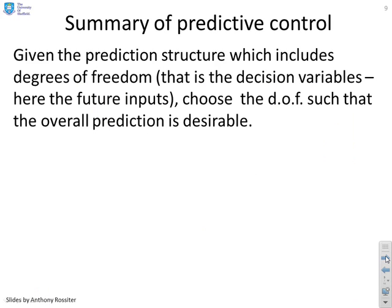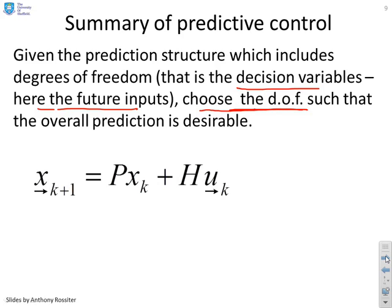So in summary, we've given a prediction structure which includes the degrees of freedom, which is the decision variables or the future inputs. And so what we can do now, now we've got this in compact form, is we can say how might I choose my degrees of freedom such the overall prediction is desirable.